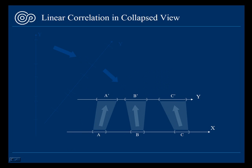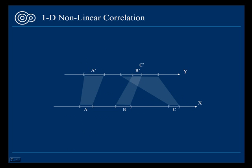This view enables simpler view for nonlinear correlations. For instance, here is a nonlinear correlation displayed in collapsed view. The interval c is mapped to the interval c' that overlaps with interval b', even though the source b and c do not overlap each other. This interval-to-interval relationship is thus nonlinear.